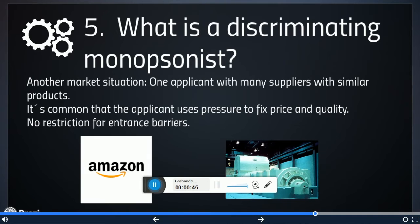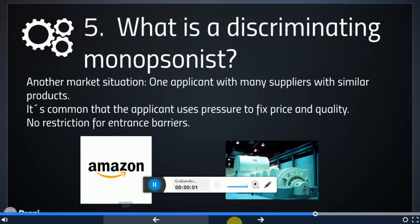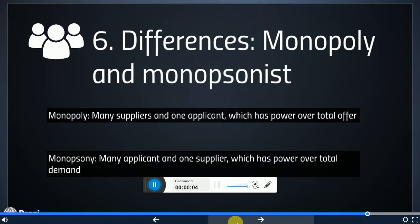How does it differ from the discriminating monopolist? A discriminating monopolist, as my colleague Ignacio said, would be the opposite of a discriminating monopsonist. It would be a market where there are many applicants and just one supplier. An example could be Renfe because it is the only supplier of train travel in Spain.